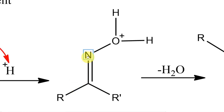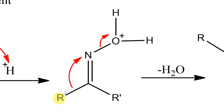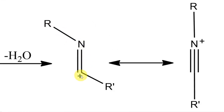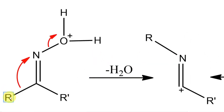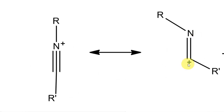As nitrogen becomes electron deficient, the R group migrates to it. The R group migrates with its electrons — one electron belonged to R and one to carbon, but now the maximum probability of finding those electrons is between nitrogen and R, represented by the curved arrow. This carbon loses one electron and gets a positive charge. The R group has migrated and there is a plus charge on this carbon. This has a resonance structure: the lone pair on nitrogen stabilizes the carbocation. The group trans to the leaving group migrates — R migrates, R' never migrates.